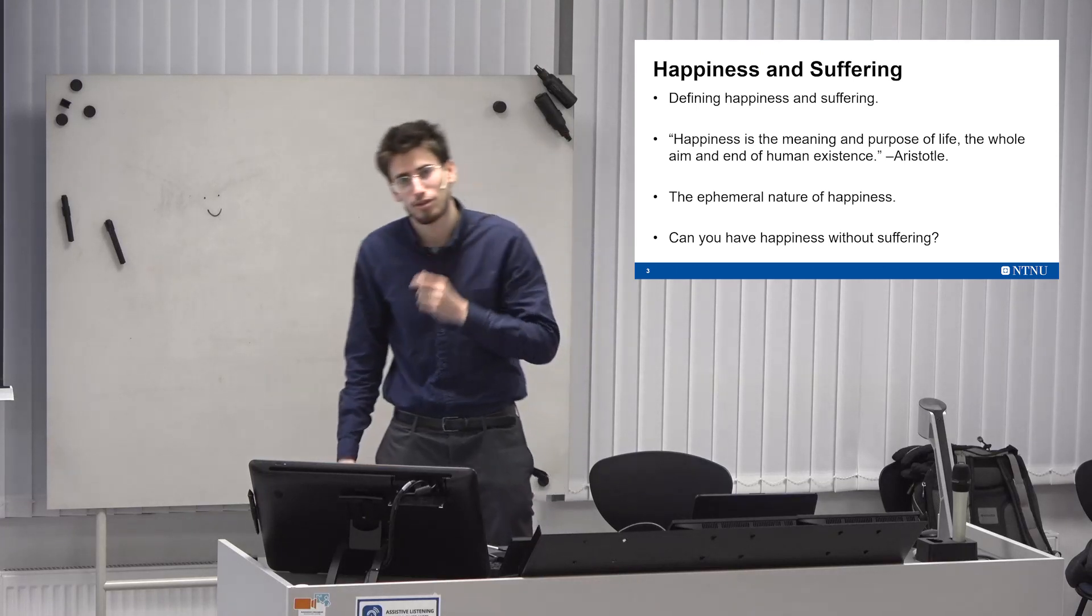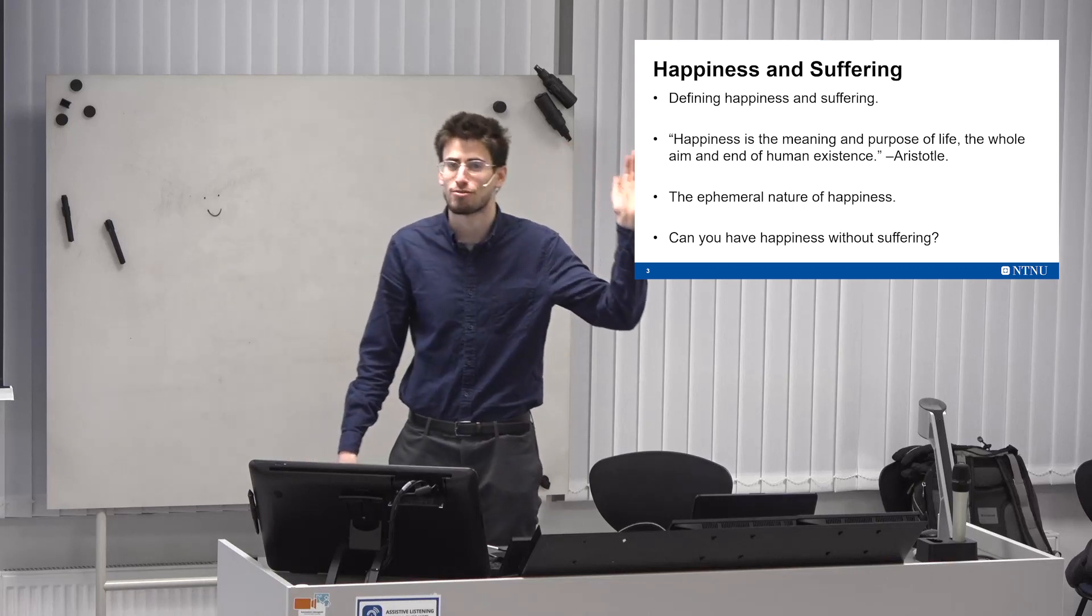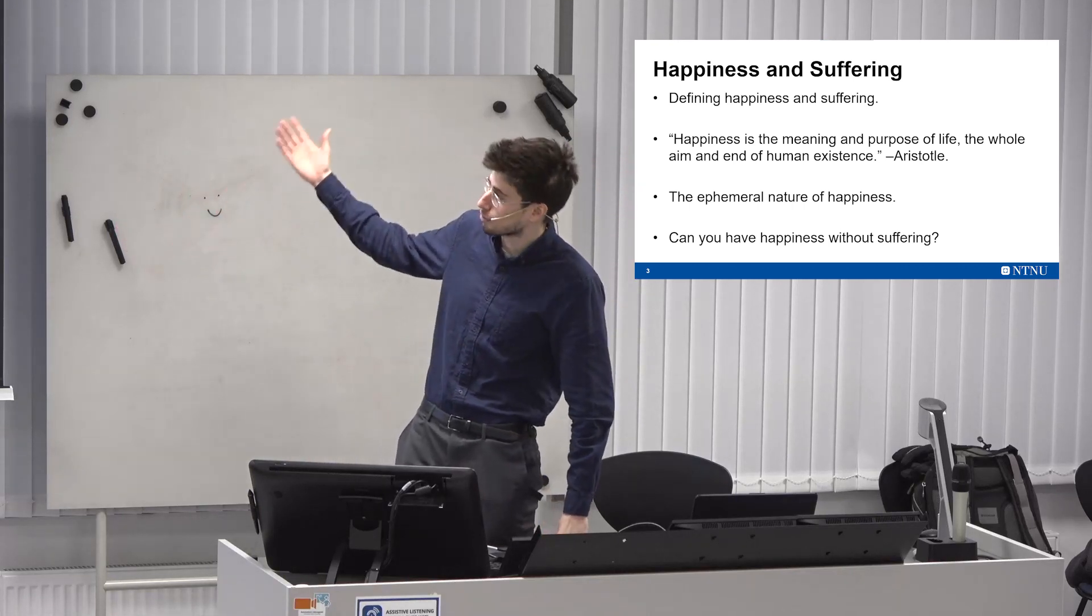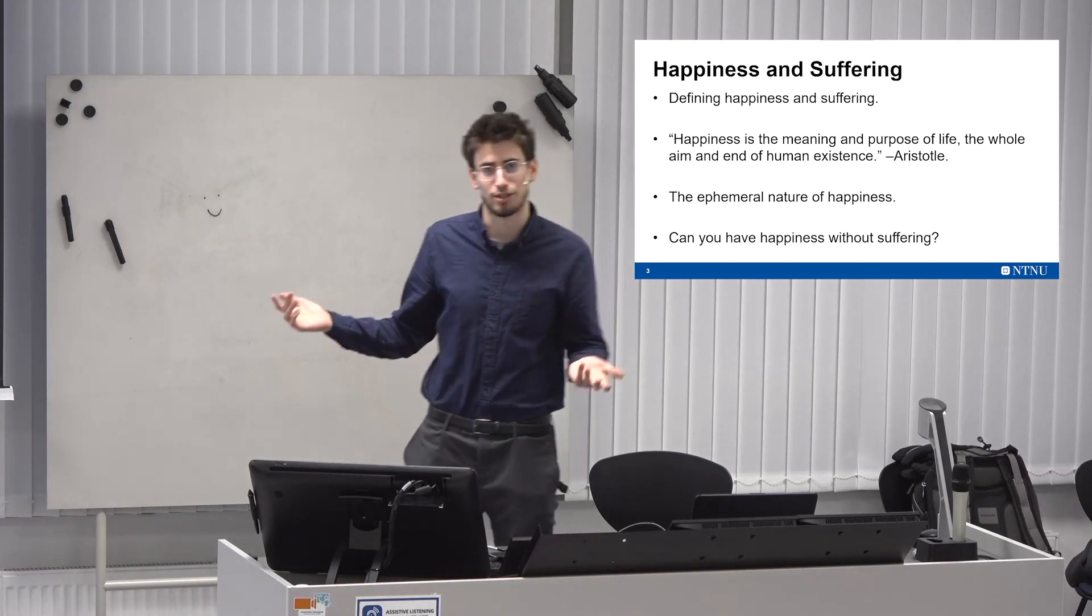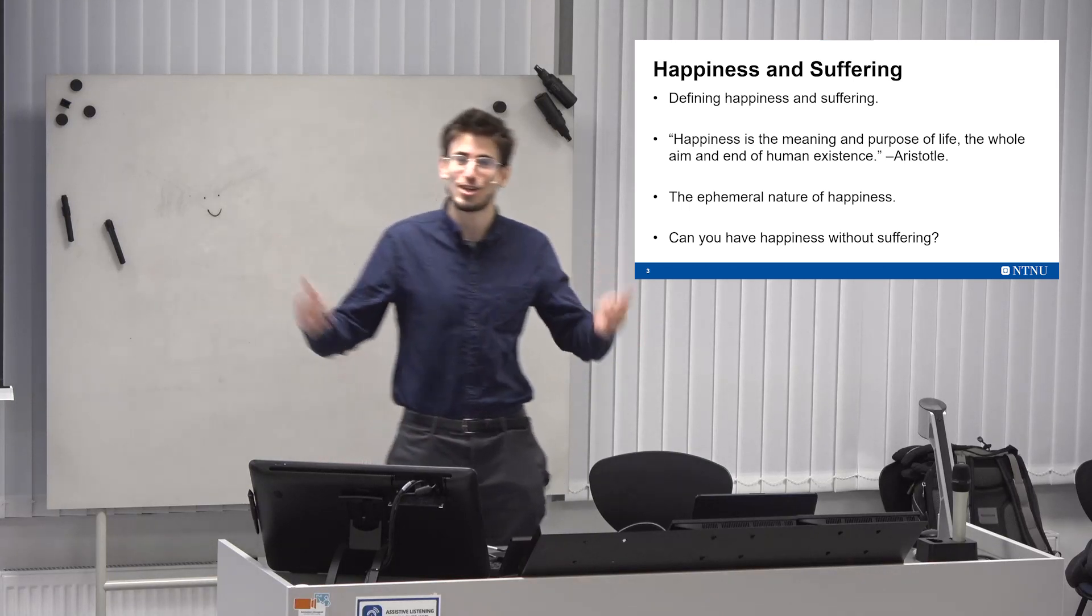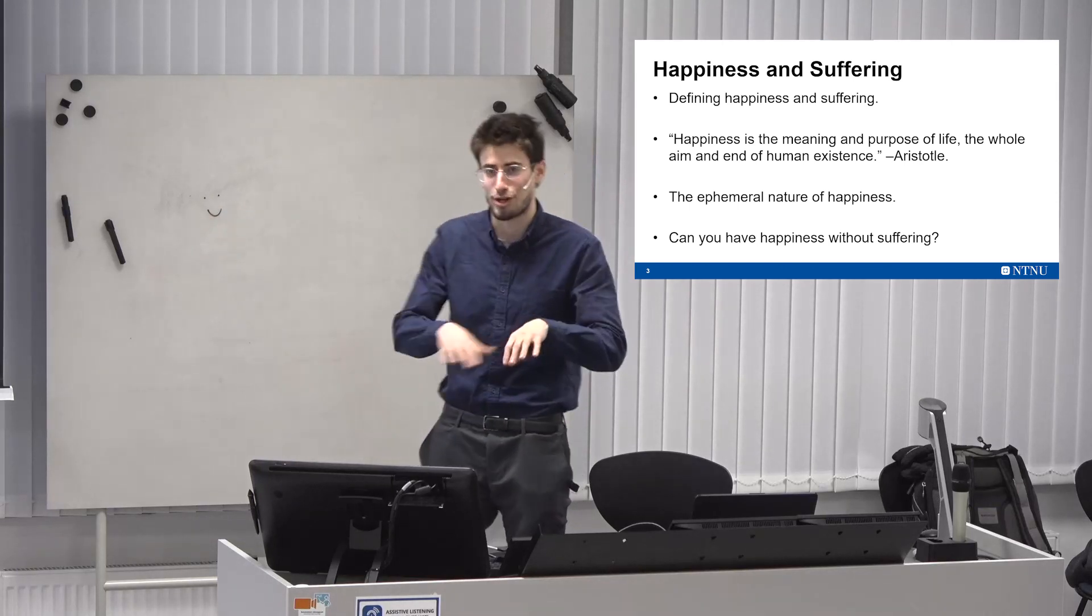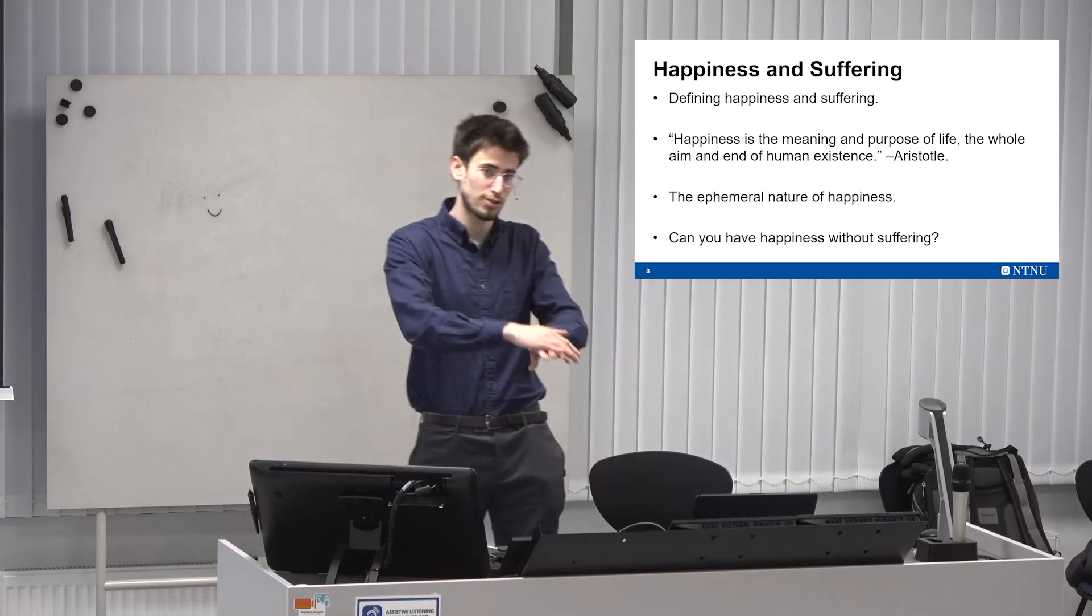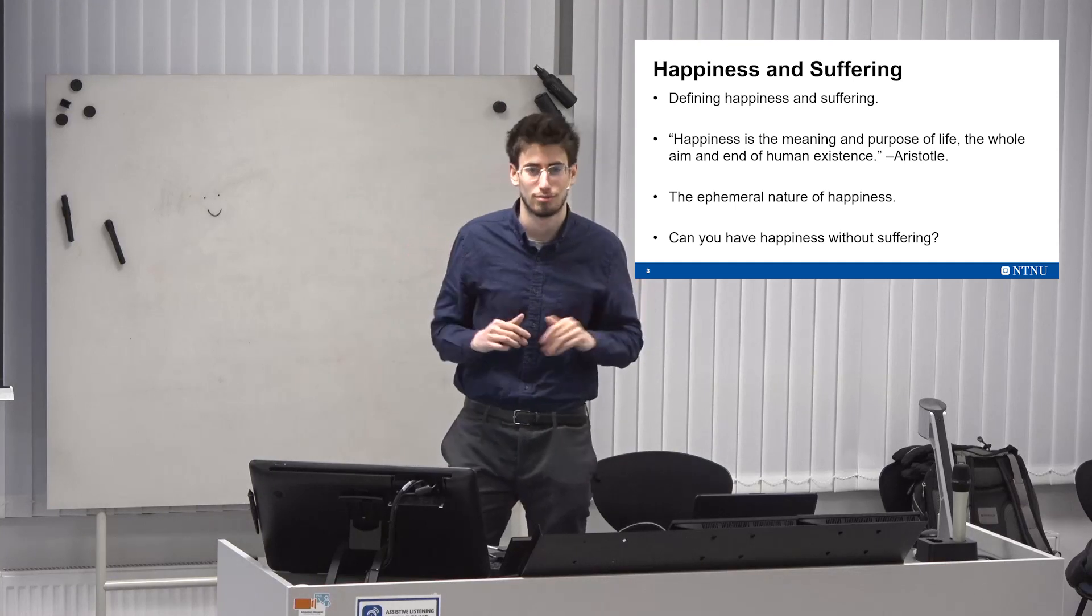And Aristotle, a very wise philosopher from 2000 years ago, he said, happiness is the meaning and purpose of life, the whole aim and end of human existence. And what does this mean? Well, for those wondering what's the meaning of life, why am I here on planet Earth? Well, Aristotle says that you're here to be happy, to have goals, accomplishments you want to achieve, desires. You achieve them and then you feel happy.